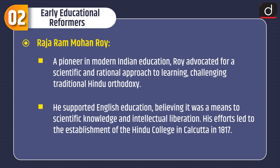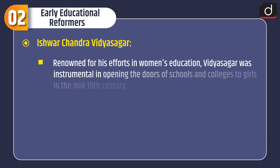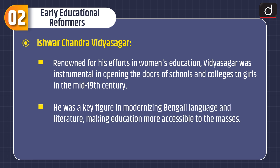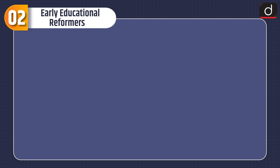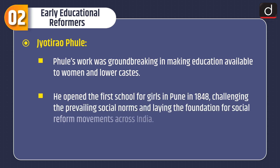His efforts led to the establishment of the Hindu College in Calcutta in 1870. Eeshwar Chandra Vidya Sagar was renowned for his efforts in women's education, instrumental in opening the doors of schools and colleges to girls in the mid-19th century. He was a key figure in modernizing Bengali language and literature, making education more accessible to the masses. Jyothi Rao Phule's work was groundbreaking in making education available to women and lower castes. He opened the first school for girls in Pune in 1848, challenging prevailing social norms and laying the foundation for social reform movements across India.